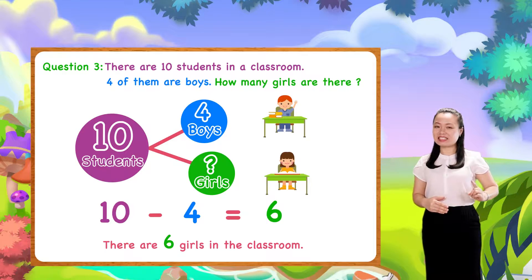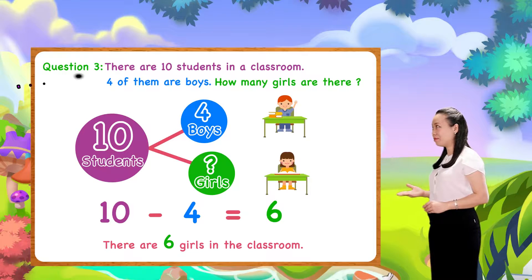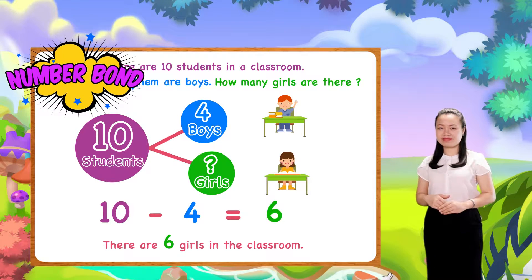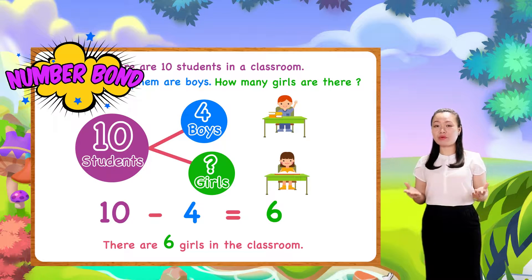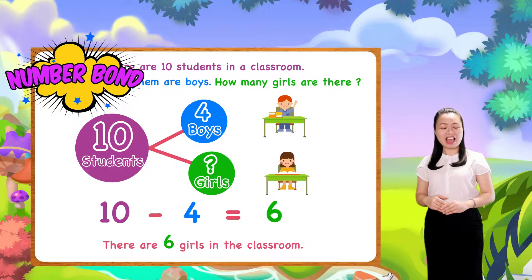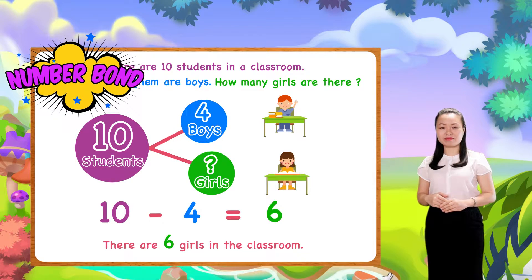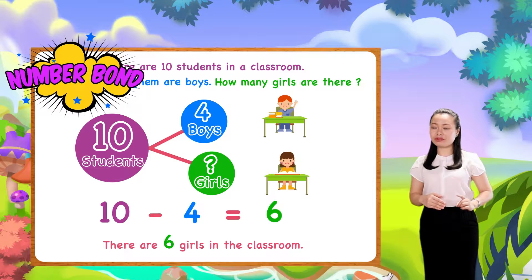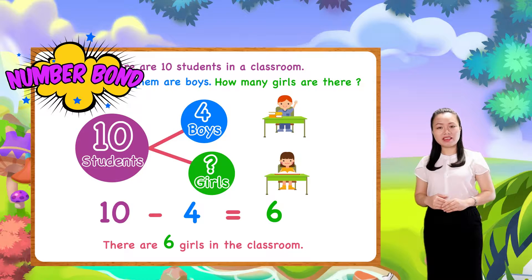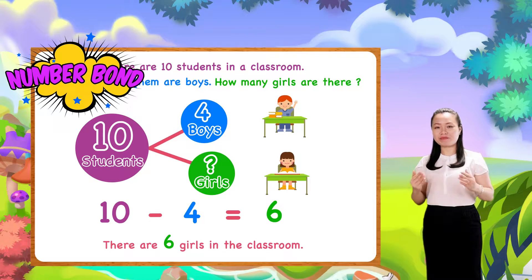Sometimes, we can use a number bond to model a word problem. If you have to find a part, just subtract the other part from the whole.